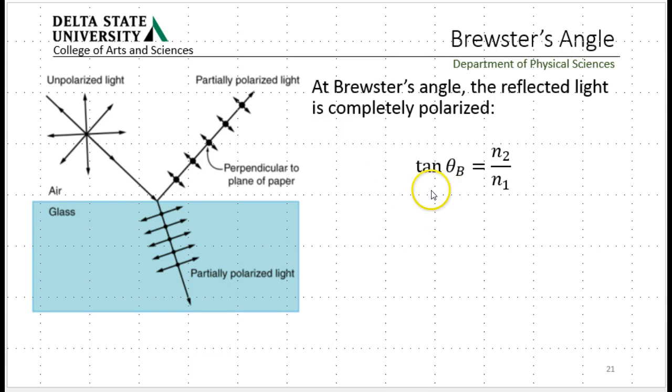Well, Brewster's Angle is the angle here, theta B. Brewster's Angle is the angle where the reflected light is completely polarized. At this point, all the light going that direction is polarized. The light coming down into the media that gets refracted is partially polarized.